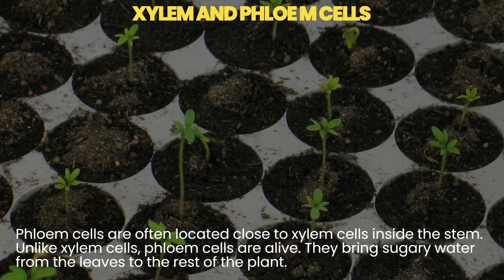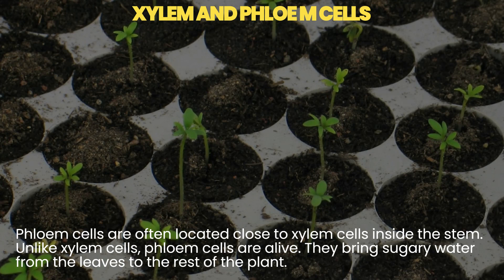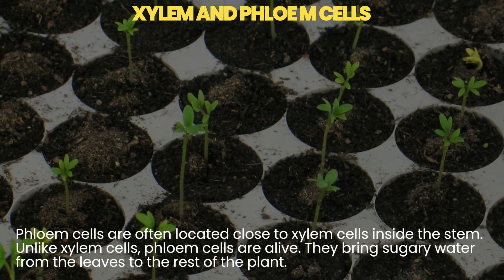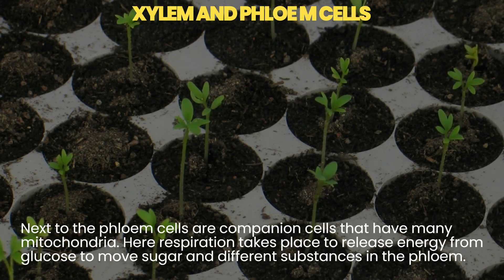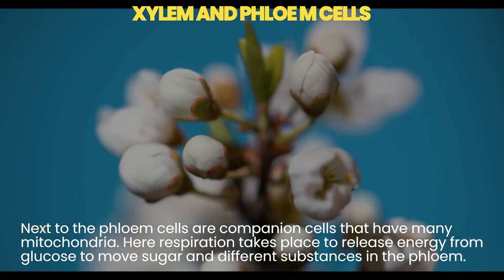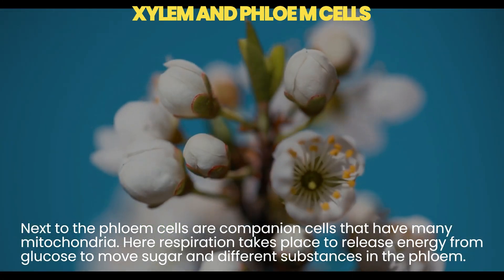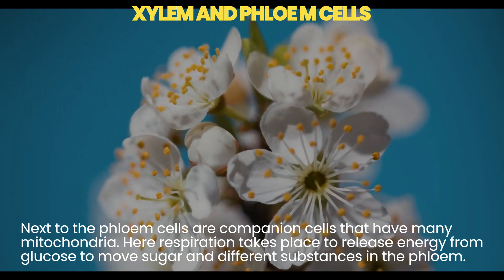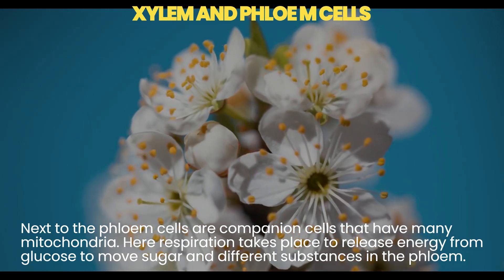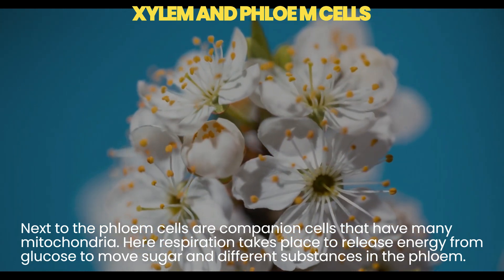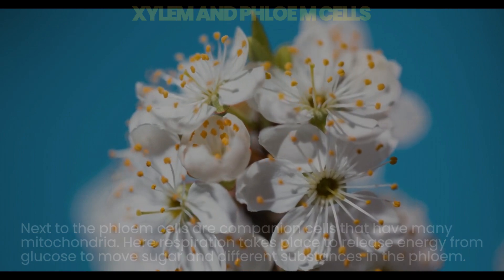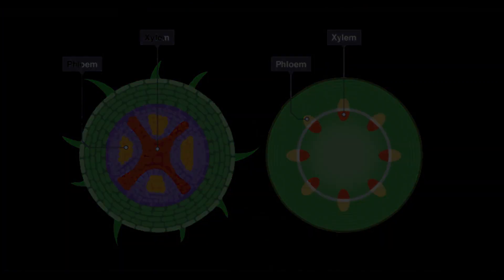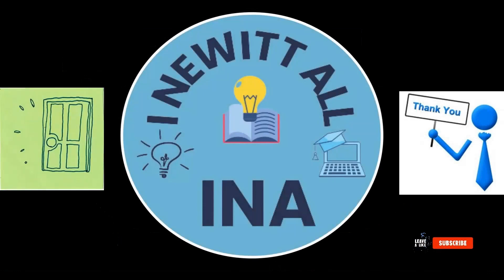Phloem cells are often located close to xylem cells inside the stem. Unlike xylem cells, phloem cells are alive. They bring sugary water from the leaves to the rest of the plant. Next to the phloem cells are companion cells that have many mitochondria, where respiration takes place to release energy from glucose to move sugar and other substances through the phloem.